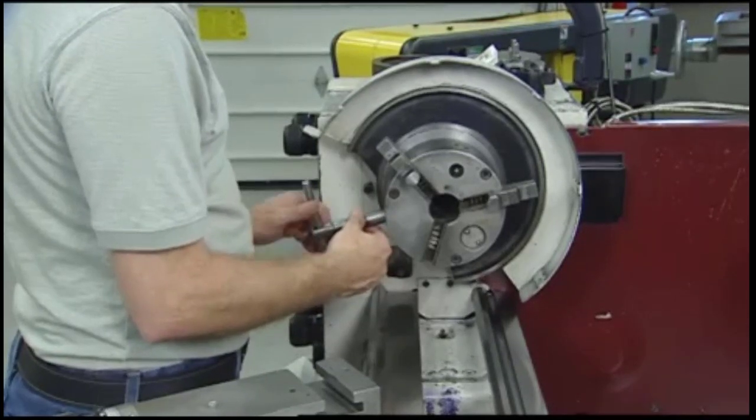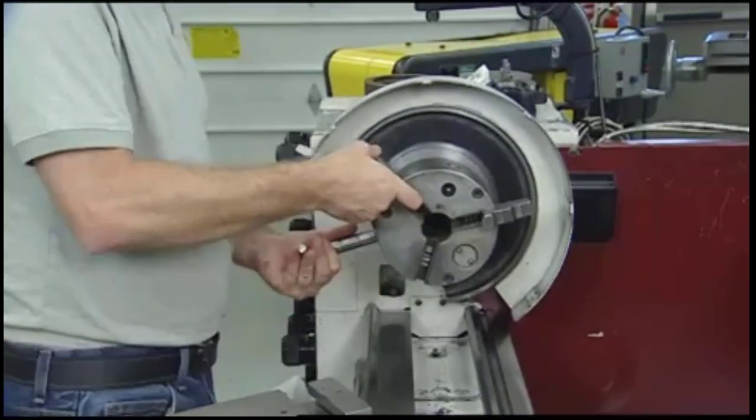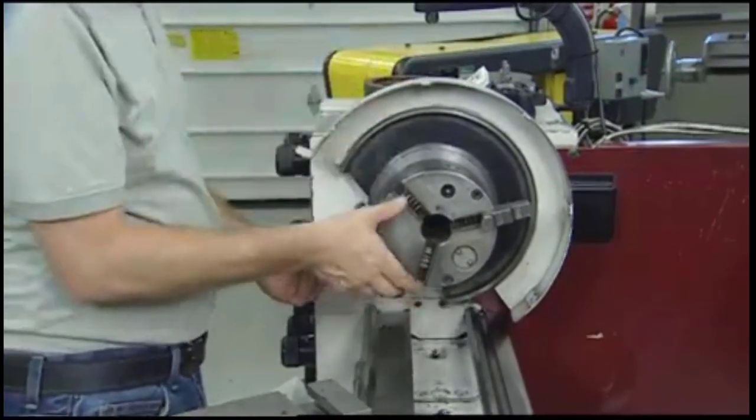However, you'll need to remove the standard jaws first by turning the wrench counterclockwise until the jaw stops moving. Then remove the jaws from the chuck body.